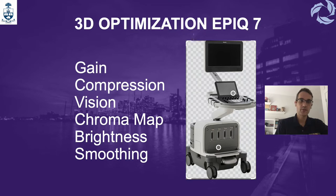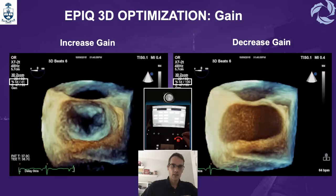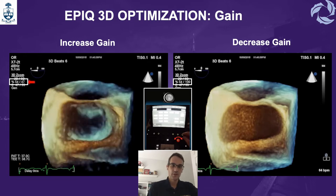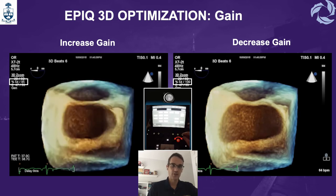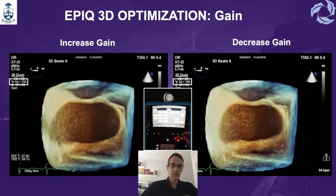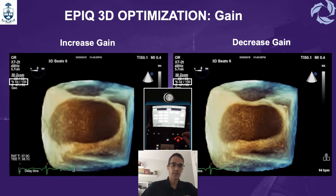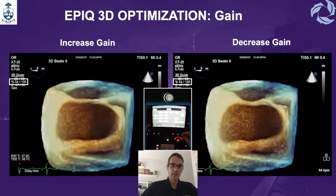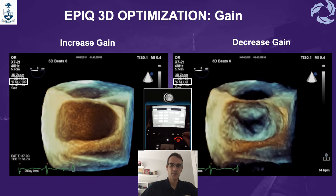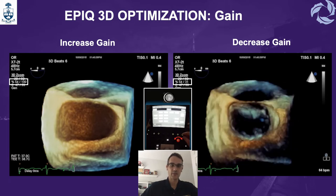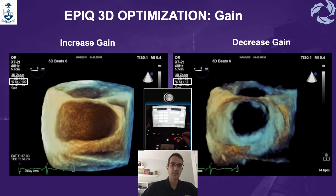In the next part of our talk, we are going to be talking about the 3D optimization in the Epic — not the display. To optimize the 3D image, you need to adjust your gain. You want to increase your gain, as shown on the left part of the screen. You don't want to over-gain, but you definitely want to decrease a little bit until you achieve 50 to 45 percent, and then you can start to see your mitral valve. You don't want to undergain too much either, because then you can actually start to see holes in the image that are not there.